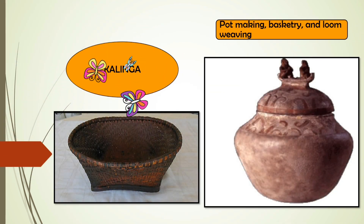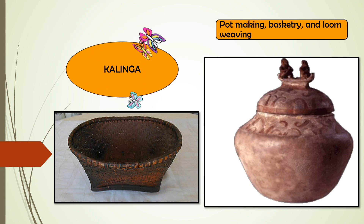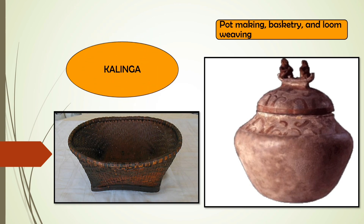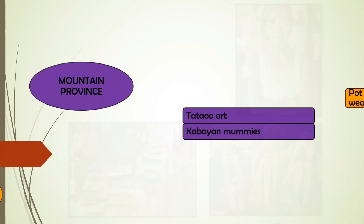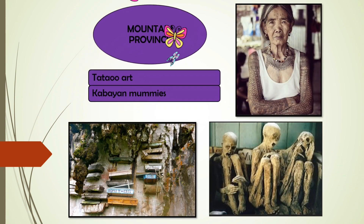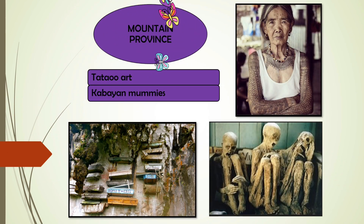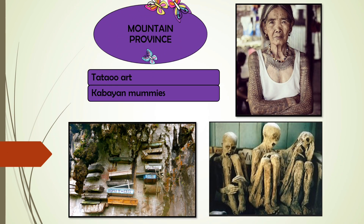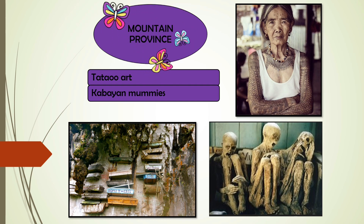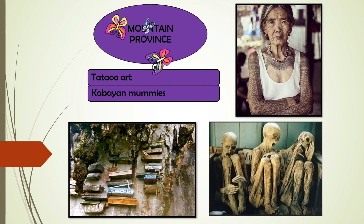Kalinga are skilled in pot making, basket weaving, and loom weaving. Mountain Province is known for their tattoo art as a form of folk art in their province. They are also known for their hanging coffins and mummified bodies.